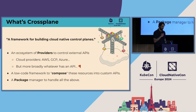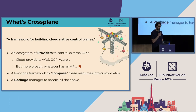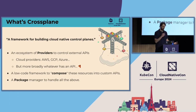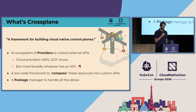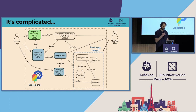Let's quickly introduce Crossplane. The sales pitch describes it as a framework for building cloud-native control planes, but you can see it as three things: an ecosystem of providers to manage external APIs such as cloud providers — look up 'provider-pizza' if you want to check how to order a pizza using Crossplane — a low-code framework to compose these resources into custom APIs, and a package manager to handle all of the above. This translates into something pretty complex, and this is not even the whole thing. We really need good testing coverage to have confidence shipping new features, refactoring code, or fixing bugs.